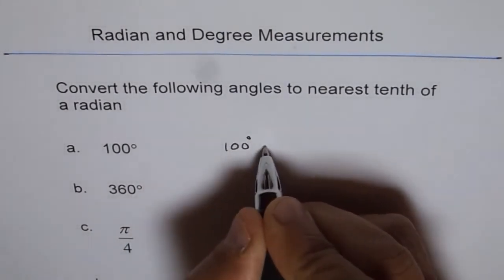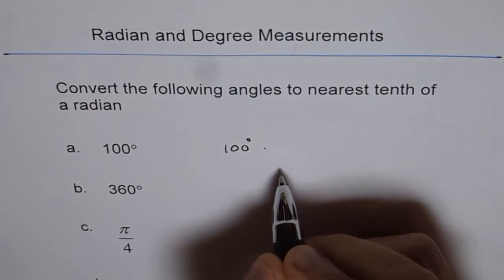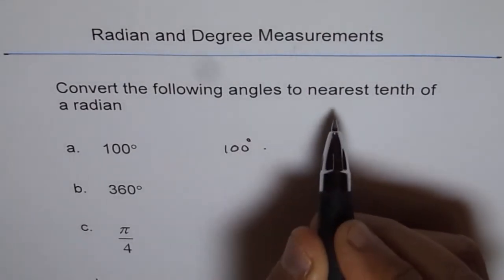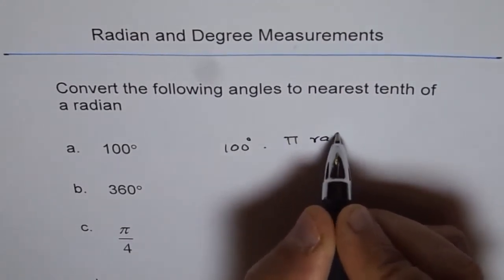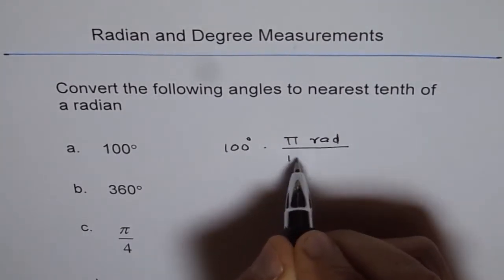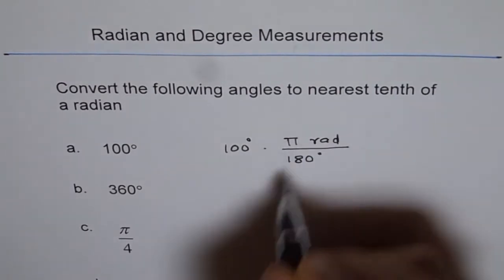You just have to do 100 degrees times, what should come on the top? You want to convert to radians, so radians should come on the top. That is pi radians divided by 180 degrees. So this is what you are doing.